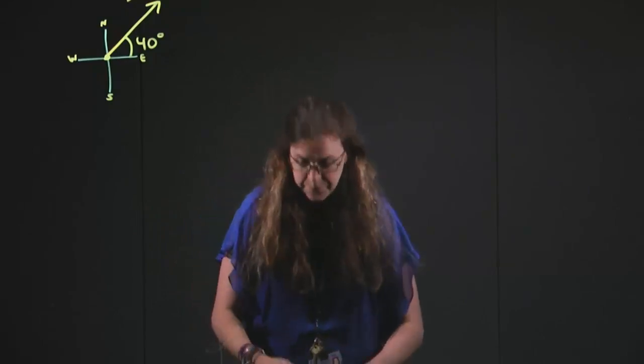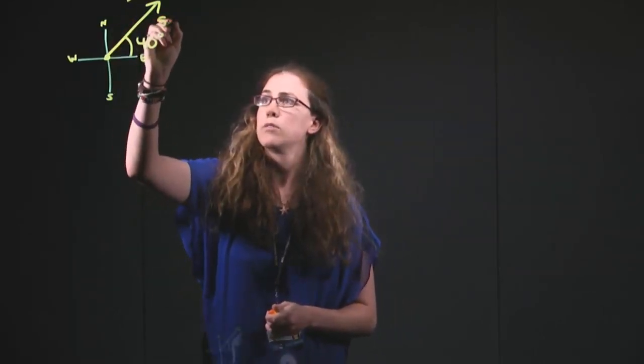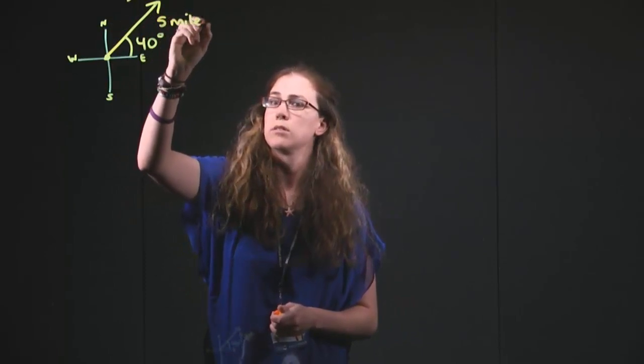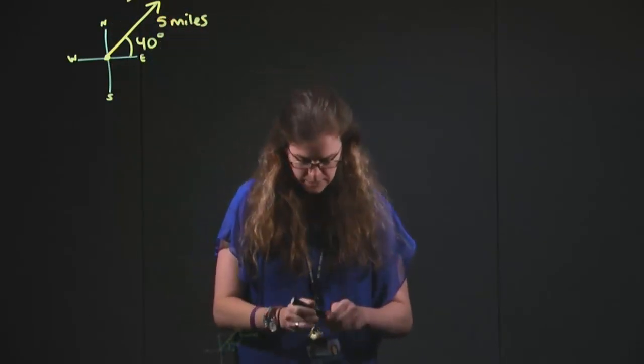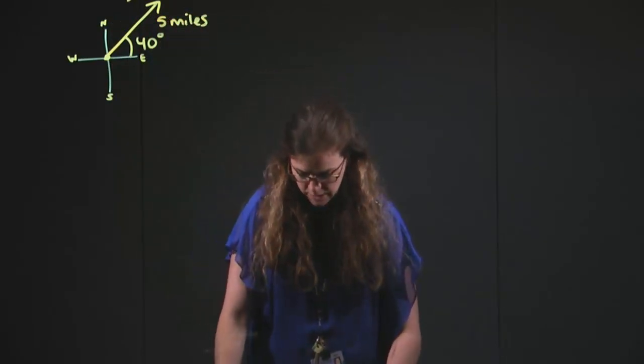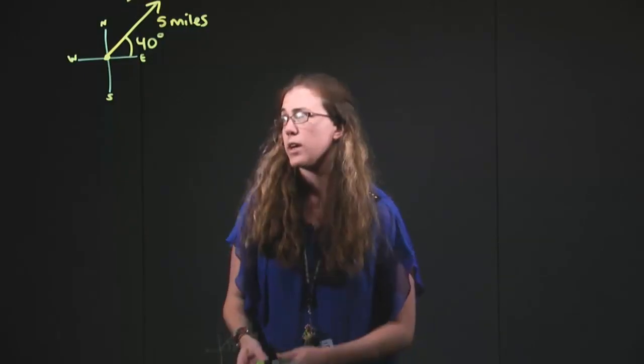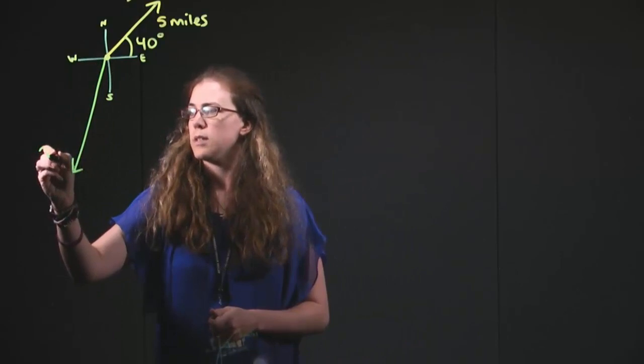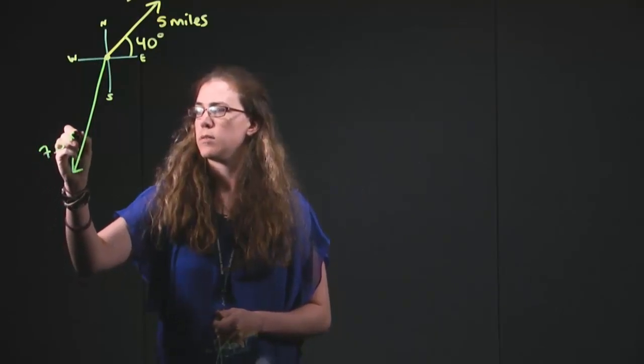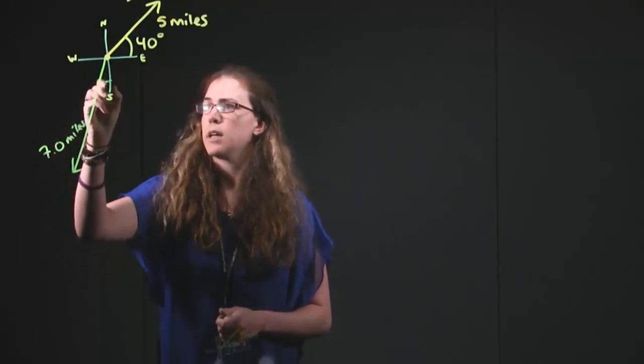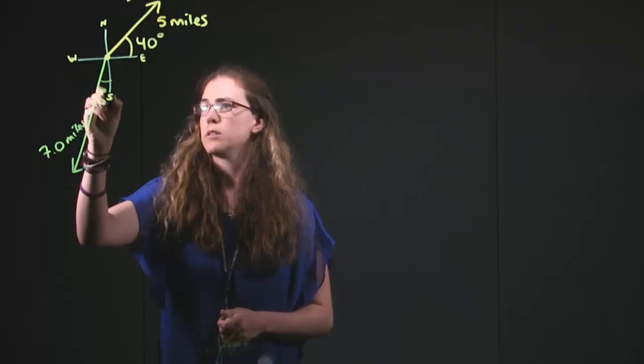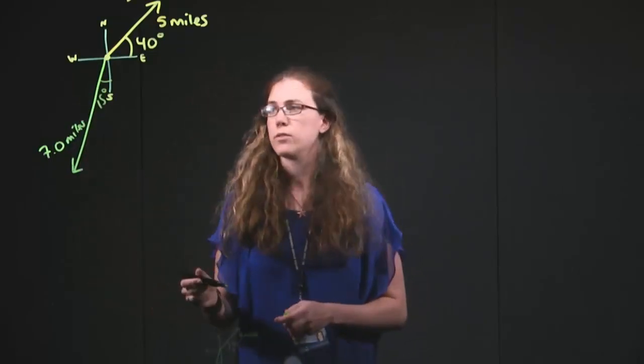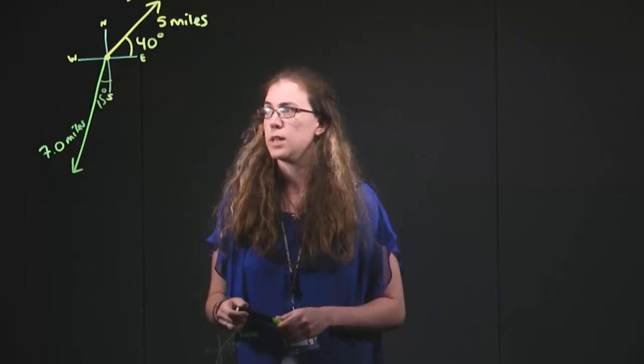We've got 5 miles for this one. Then if we have a second vector, let's say that that's 7 miles at an angle of 15 degrees. And this would be west of south, if you were using that same kind of system.